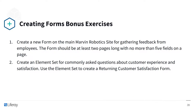Additionally, we have two bonus exercises, which we won't cover in this video, but you can complete them on your own. These are: create a new form on the main Marvin Robotics site for gathering feedback from employees — the form should be at least two pages long with no more than five fields on a page; create an element set for commonly asked questions about customer experience and satisfaction, and use the element set to create a returning customer satisfaction form.